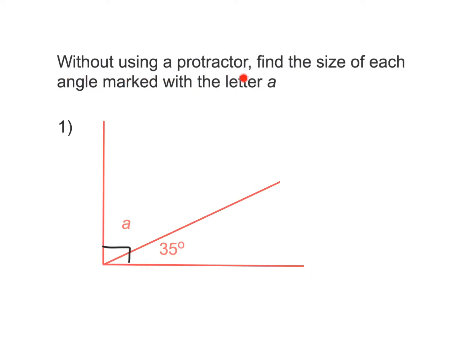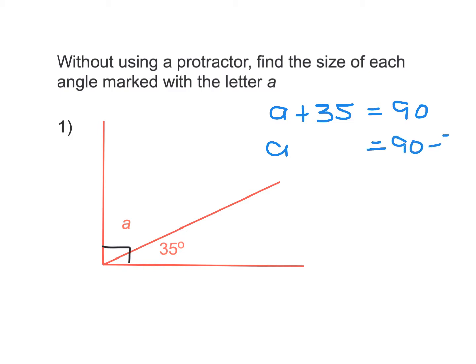Let's do some practice. Without using a protractor, find the size of the angle marked A. Pay attention to the little symbol in the corner — that little box equals 90 degrees. So what type of angles are these two? They happen to be complementary pairs of angles. We recognize that angle A added to angle 35 must equal 90 degrees. So: A plus 35 equals 90, therefore A equals 90 minus 35, therefore A equals 55 degrees.